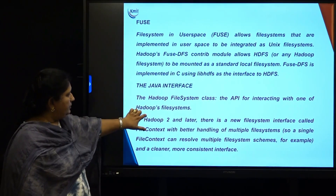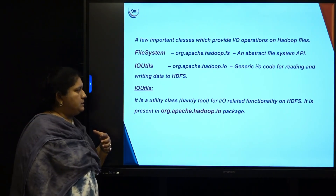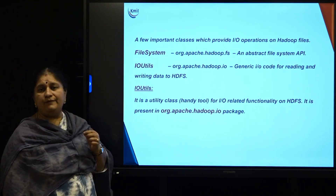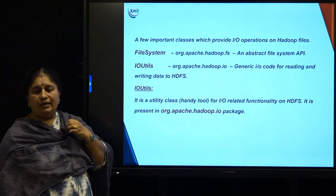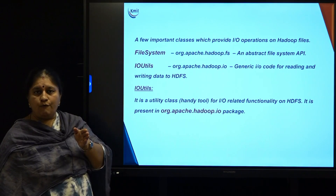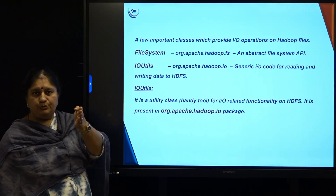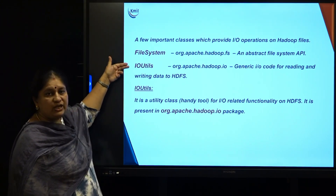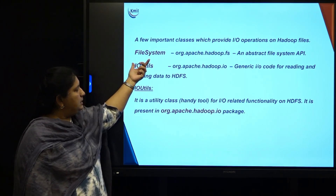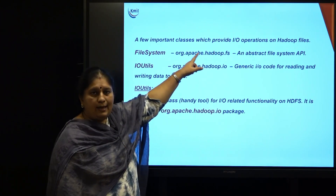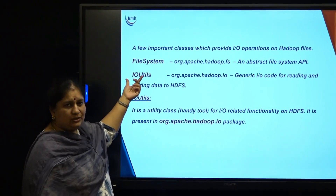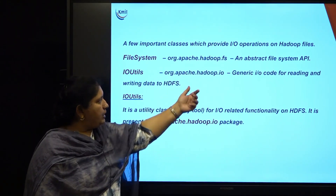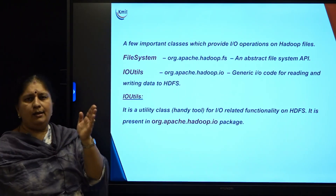Out of all these APIs and abstract classes, we need to work with two important classes: the FileSystem class and IOUtils, which are very important to interact with files. The FileSystem class comes from the package org.apache.hadoop.fs. Similarly, the IOUtils package — IOUtilities, for input-output utilities — comes from org.apache.hadoop.io, which provides all IOUtils-related operations like reading, writing, and all such things with files.